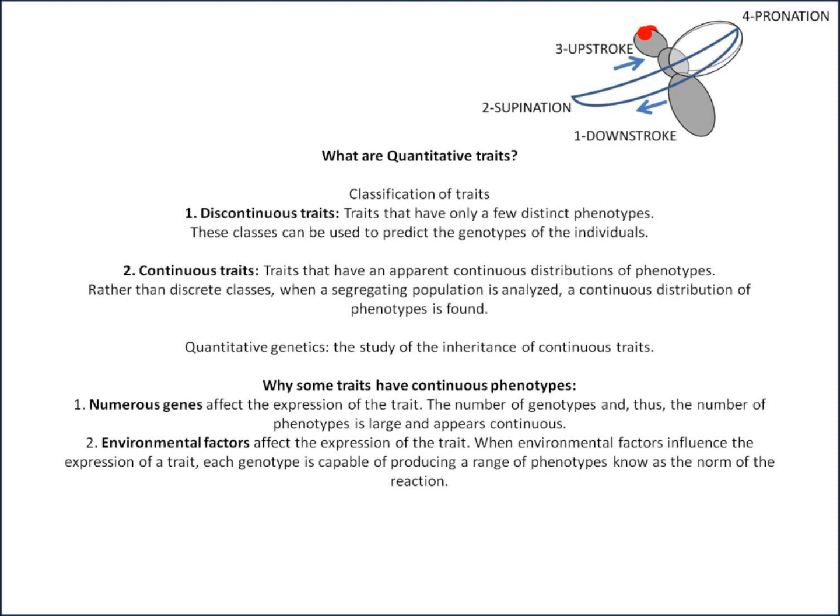The normal reaction refers to the array of phenotypes that result from a given genotype, and it shows that heritability measurements only apply in the environment in which they are measured. This is really important. The normal reaction curves are generated by plotting the phenotype of one genotype in each environment, and can then be used to determine the phenotypic distribution of the trait that we see over a wide range of environments.